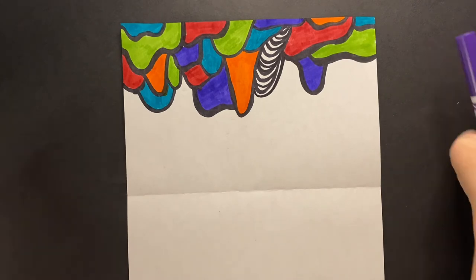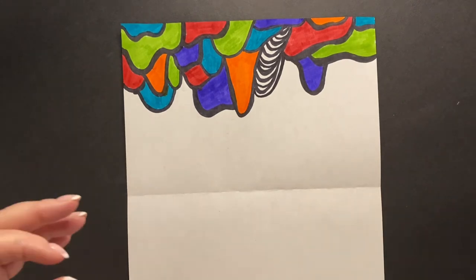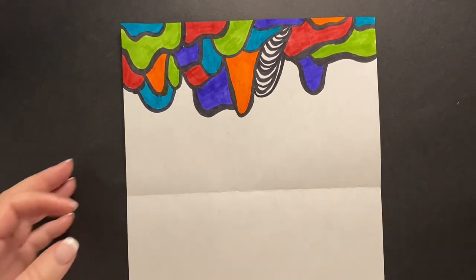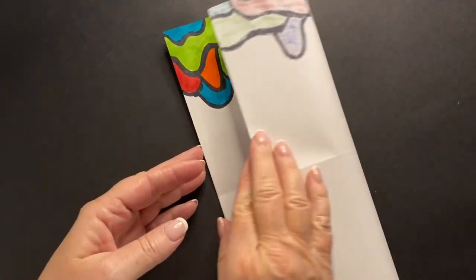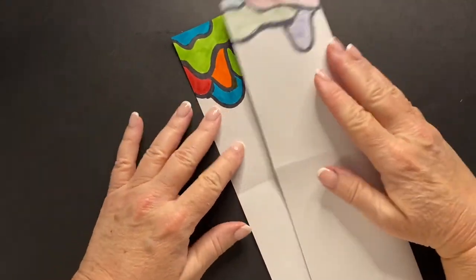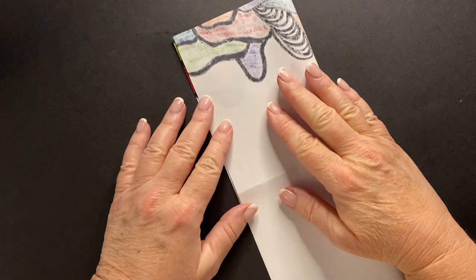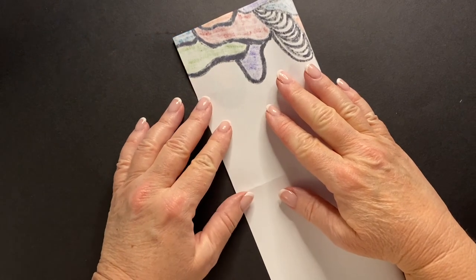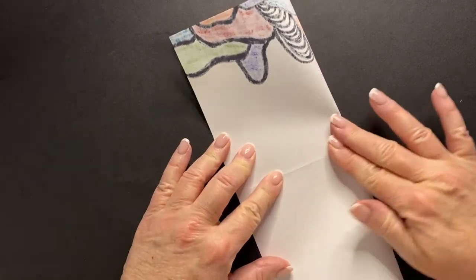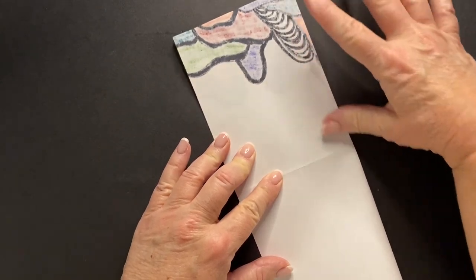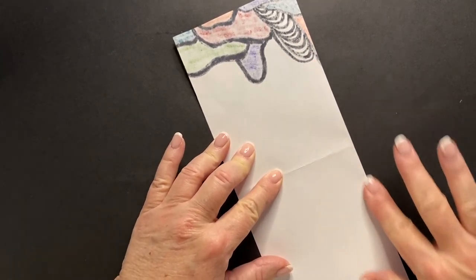And then we've got this much done. We're going to fold it again. But this time, we're going to fold it long ways. Like this. Make sure your corners match up. Go to the middle. Crease it. And go from the middle to the ends.